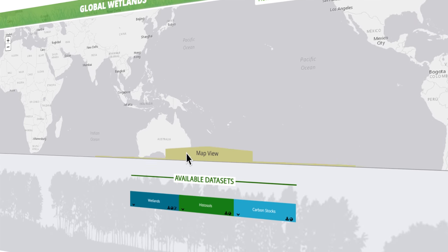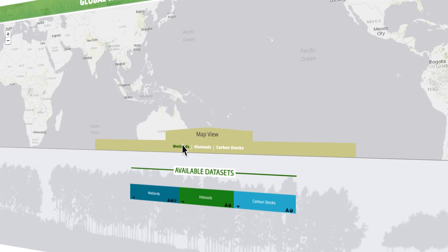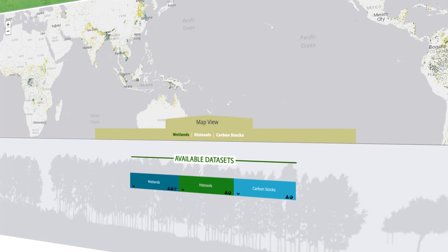This online, interactive map charts the distribution of wetlands, histosols and carbon stocks around the world.